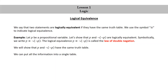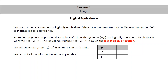We will show that p and not not p have the same truth table. We can put all the information into a single table. Since there's just one propositional variable, p, we will need just two truth assignments, true and false. We also need columns for not p and not not p. We get the truth values in the column for not p by taking the opposite truth values in the column for p — true becomes false and false becomes true. Similarly, we get the truth values in the column for not not p by taking the opposite truth values in the column for not p, so false becomes true and true becomes false.